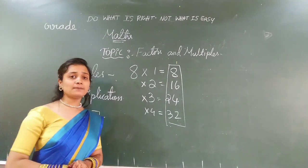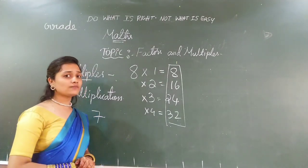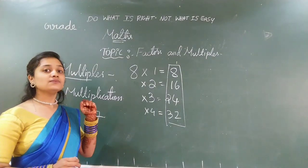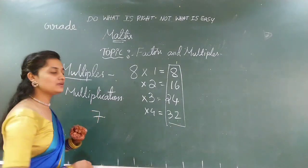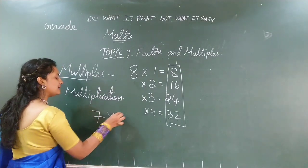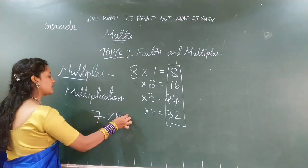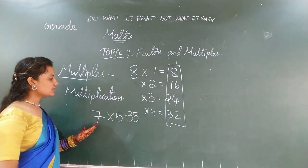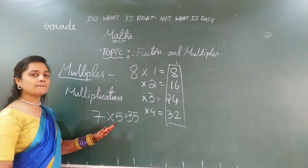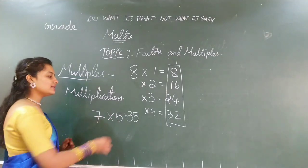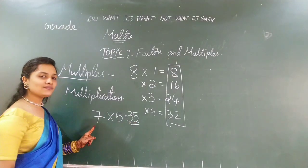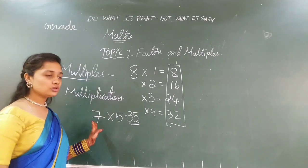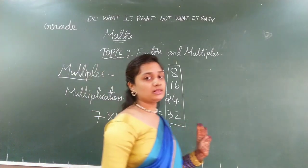Now, if I ask you to find the Multiples of 7, particularly the 5th Multiple — the 5th Multiple of 7 means 7 multiplied by 5, which is 35. So, 35 is the 5th Multiple of 7. So, this is about Multiples.